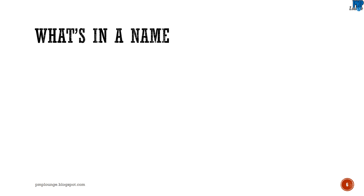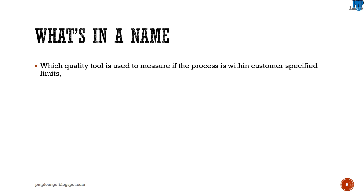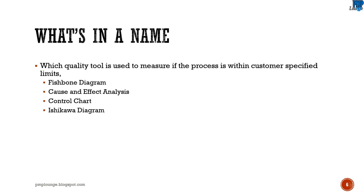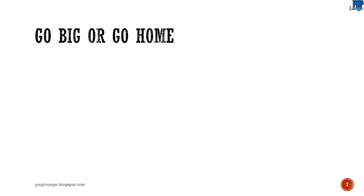Tip number three: what's in the name. There are several names for certain tools, techniques, or project management concepts, and it is always good practice to know all the names. For example: which quality tool is used to measure if the process is within customer specified limits? The options are fishbone diagram, cause and effect analysis, control chart, and Ishikawa diagram. The answer is control chart, but note that the other three options are actually all the same tool.